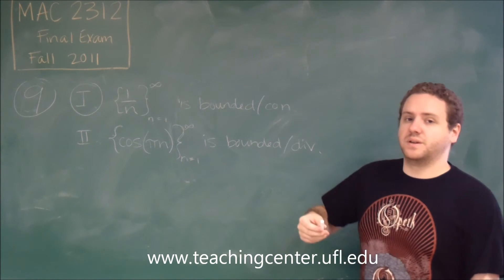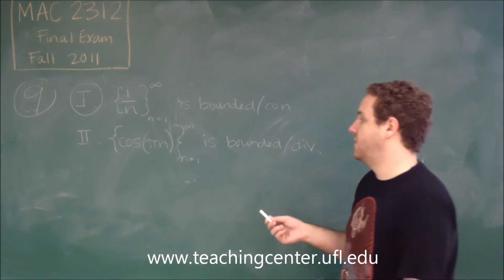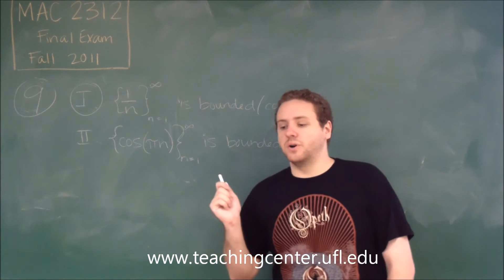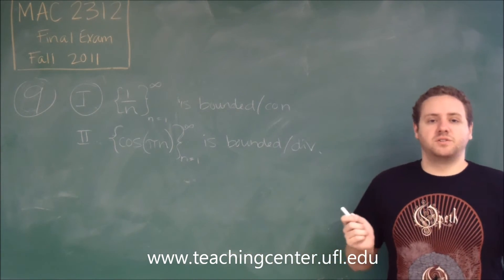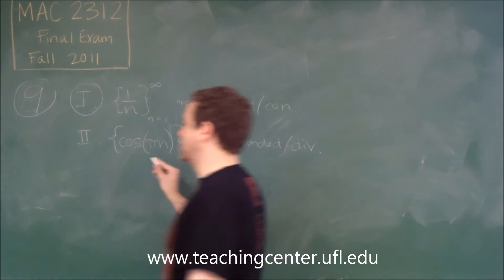Is it divergent? Yes, because this consistently alternates all the way through infinity. Therefore, this does not converge to a specific number. It keeps going back and forth between two numbers. So, it is both bounded and divergent. This is true.